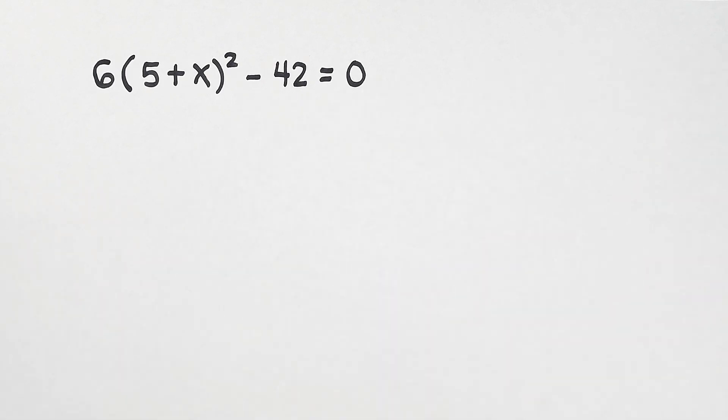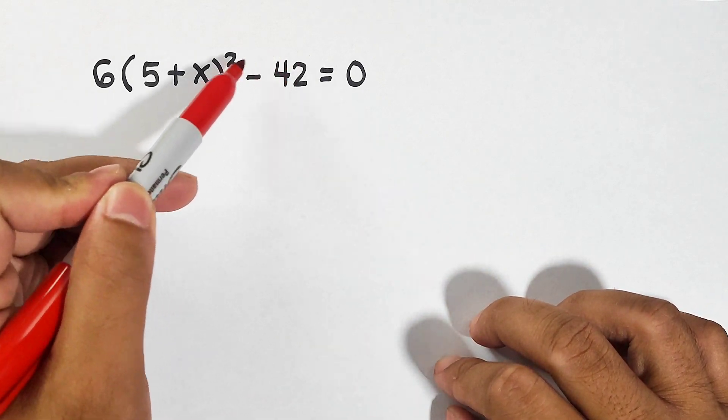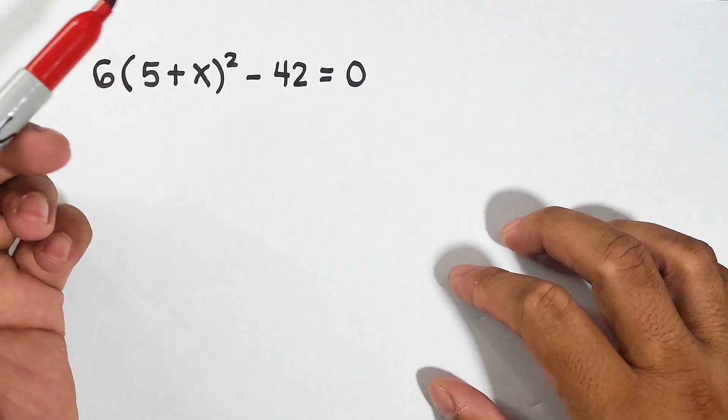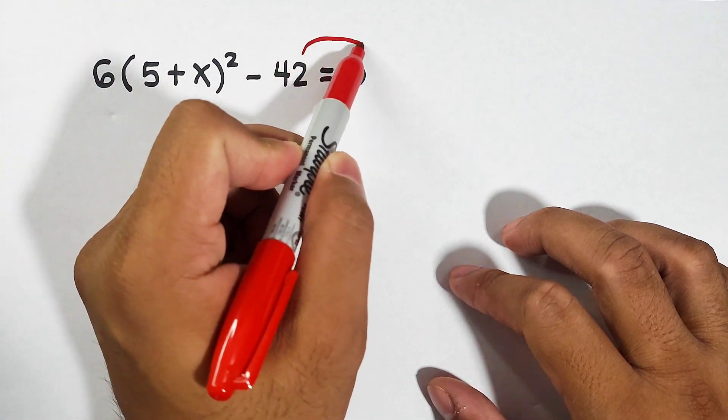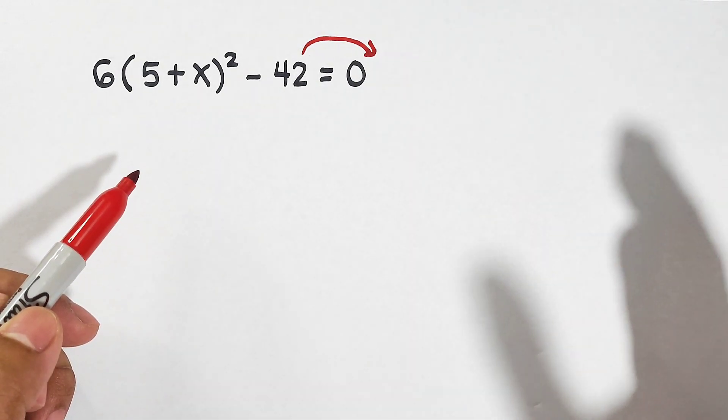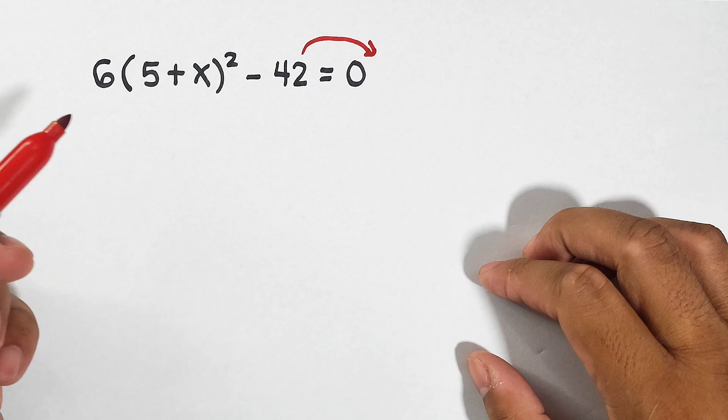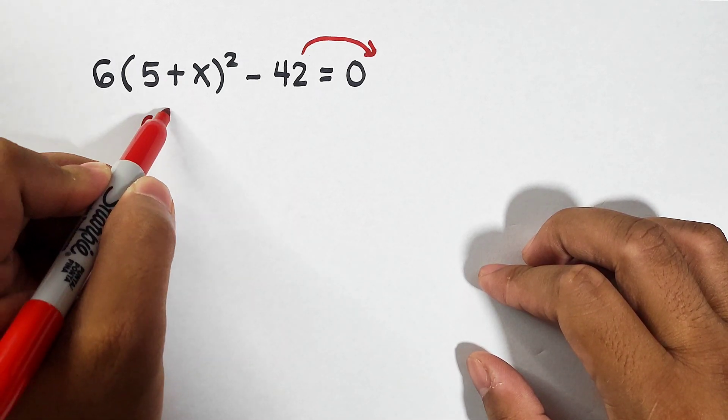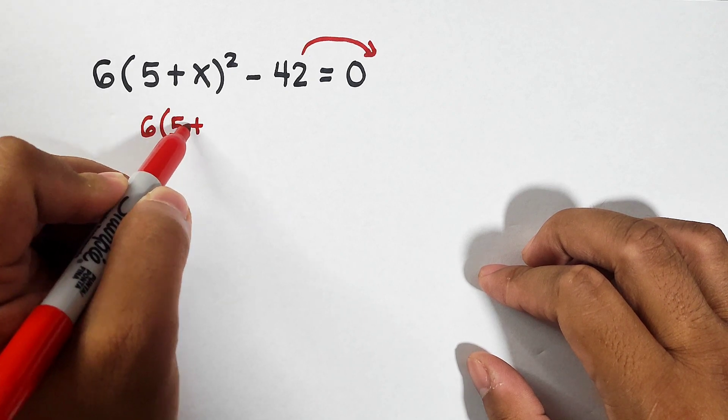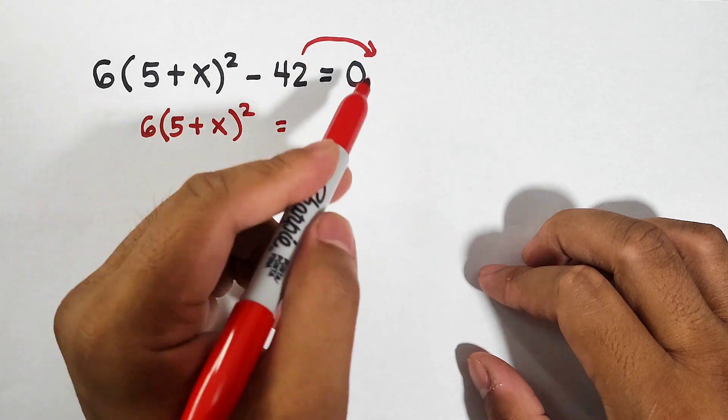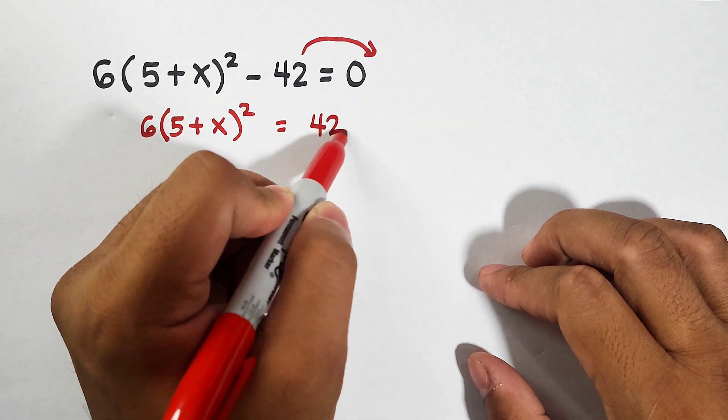Now, what's the first step to solve this problem? First, we will eliminate negative 42. You can add 42 both sides of the equation, but to make it easier for us, we will just transpose negative 42 to the other side of the equation that would make it positive 42.